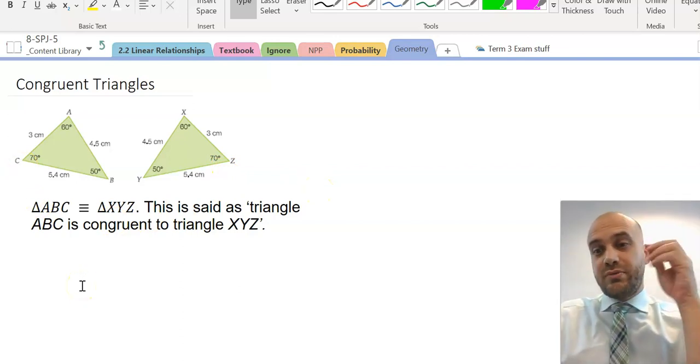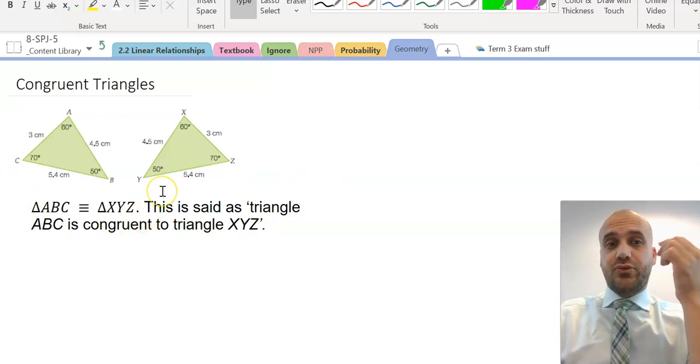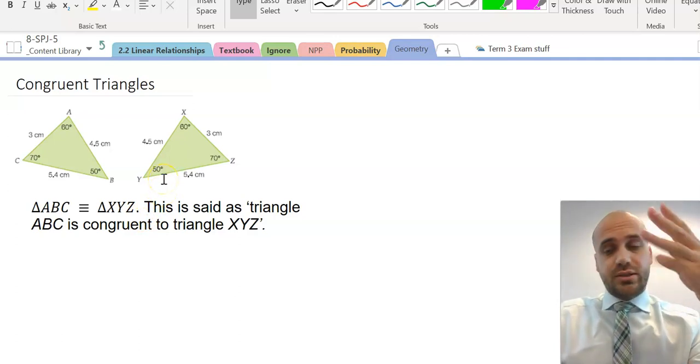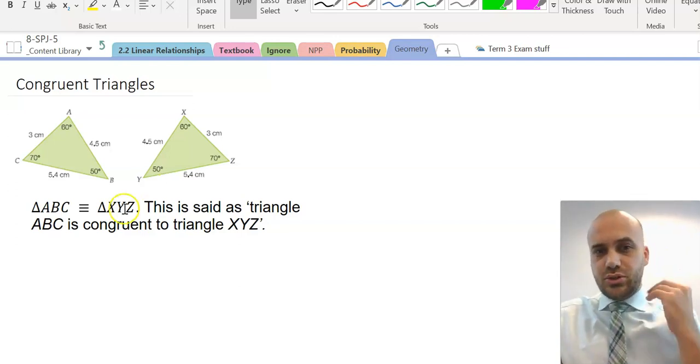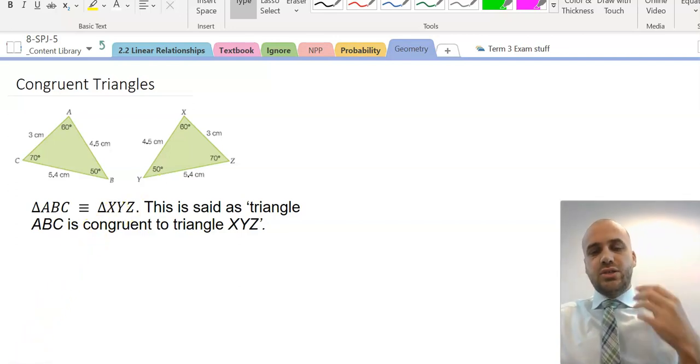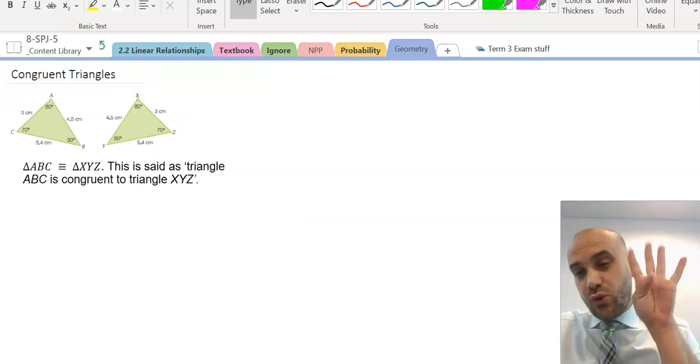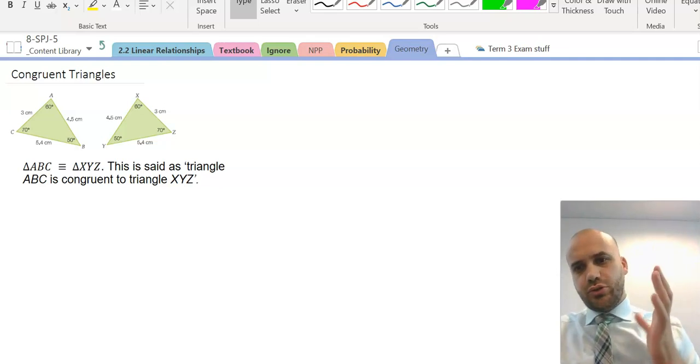Now, the deal here is that we've been given six pieces of information to find these congruent triangles. We know three side lengths and we know three angles. That is way too much information. You don't need to know all of that to figure out that two triangles are exactly the same. So, there are actually called four different tests for congruence.